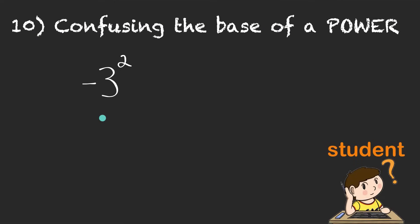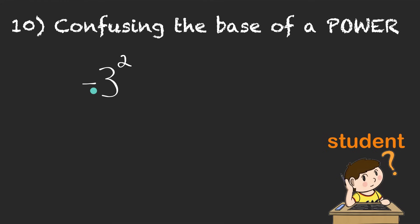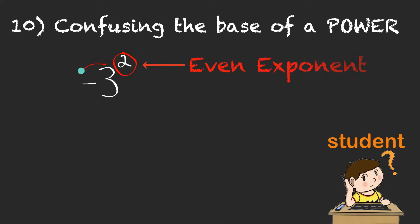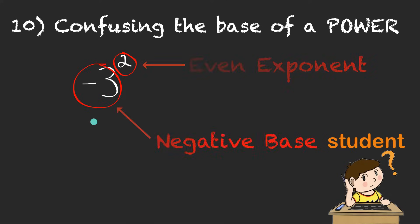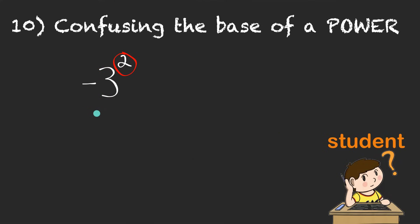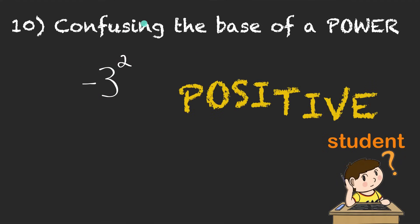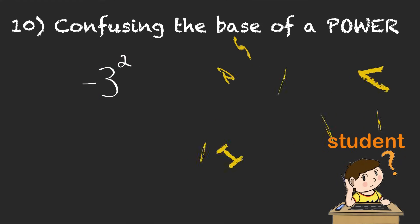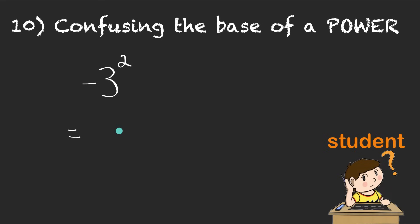This is an easy one. I've got negative 3 squared. I remember the trick my teacher told me: if I've got an even exponent on a negative base, I know my answer is going to be positive. So this one, negative 3 times negative 3, that's positive 9. Perfect.